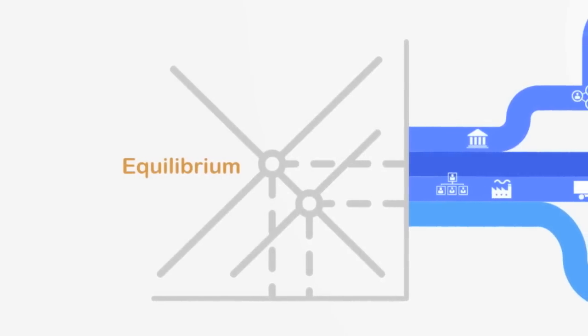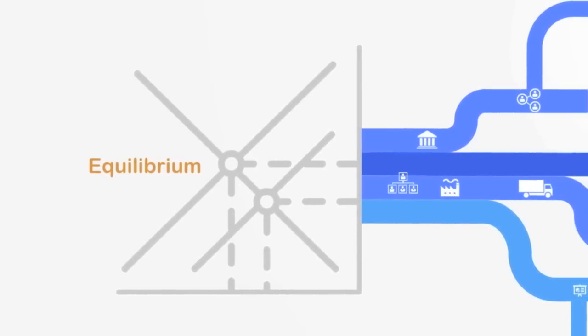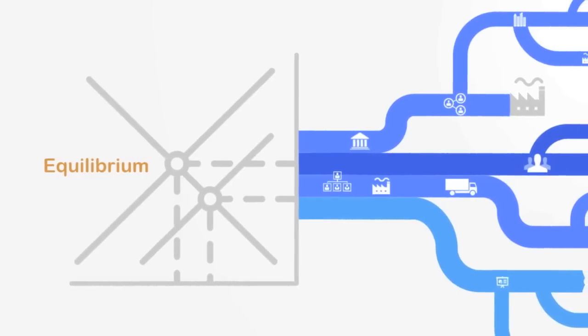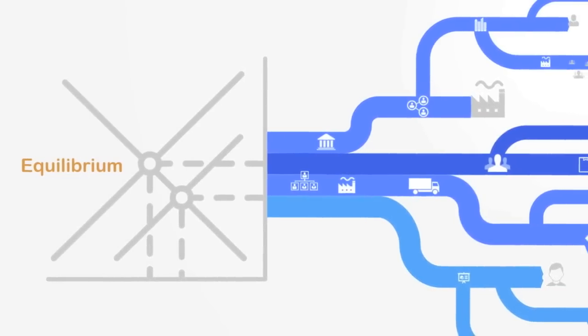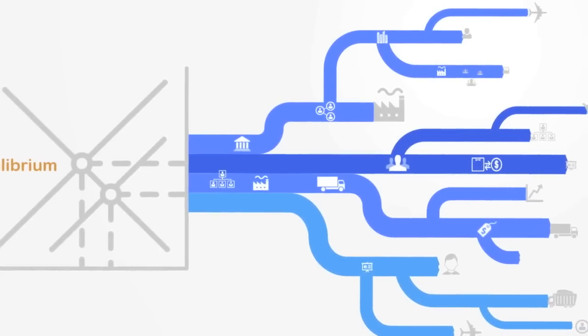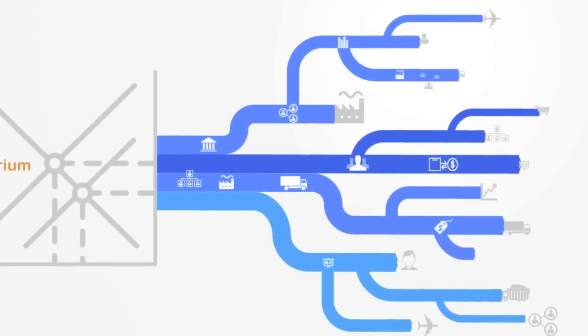As opposed to seeing the economy as the product of a static equilibrium, complexity economics is more focused upon the non-equilibrium processes that transform the economy from within through continuous adaptation and the emergence of new institutions and technologies as the economy evolves over time.